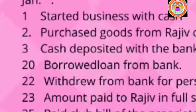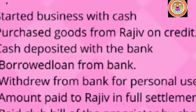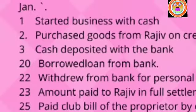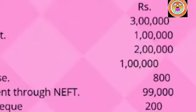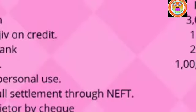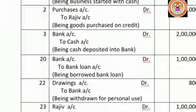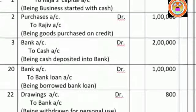January month transactions have been given. No year is available, so we can put a dash for the year. Before going to pass journal entries, we should write the format first. Write the title: journal entries in the books of Raja.